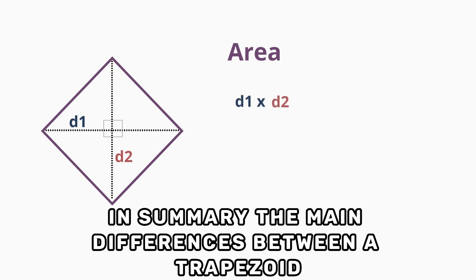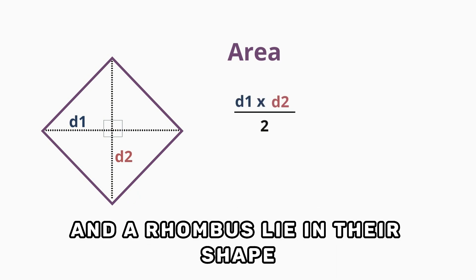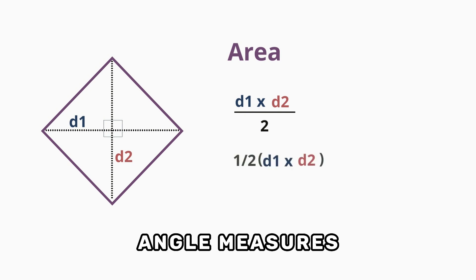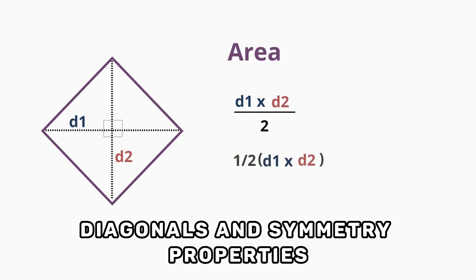In summary, the main differences between a trapezoid and a rhombus lie in their shape, side lengths, angle measures, diagonals, and symmetry properties.